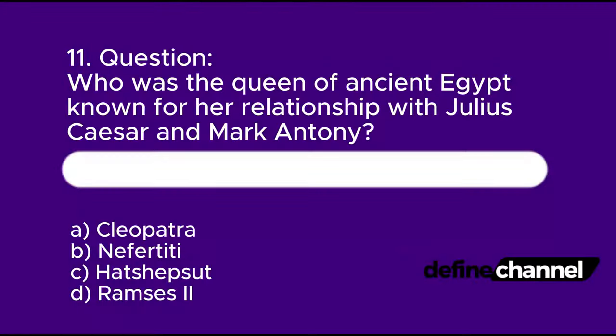Question 11: Who was the queen of ancient Egypt known for her relationship with Julius Caesar and Mark Antony? A. Cleopatra, B. Nefertiti, C. Hatshepsut, D. Ramses II. Please determine which is the correct answer.